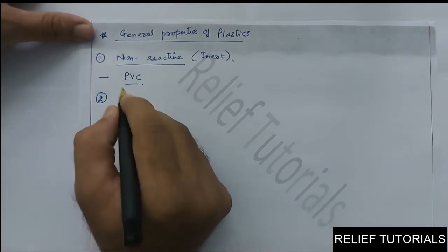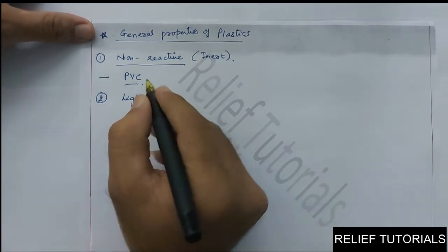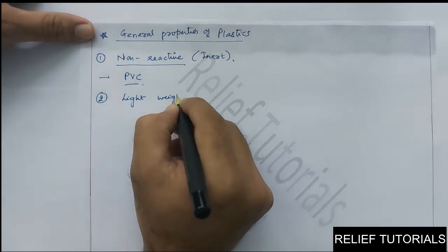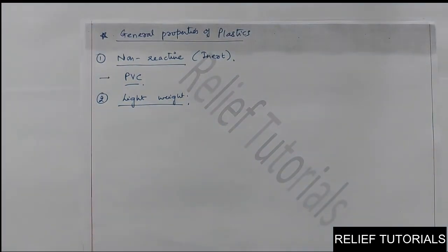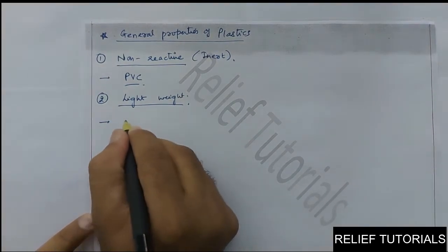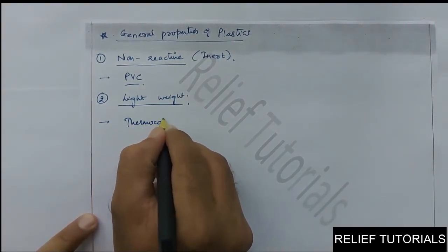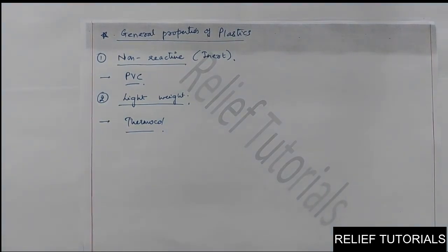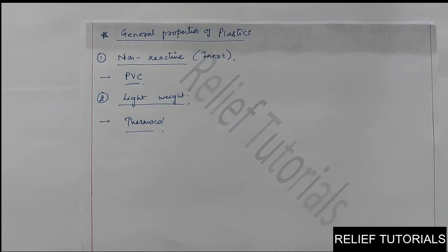Another important characteristic: plastics are lightweight. Metallic and steel bodies are heavy, but plastic materials are quite light in weight. The best example is thermocol — it is very light in weight and that is why it is used to make disposable items like disposable cups, dishes, and packaging material to pack mobile phones, TVs, refrigerators, and washing machines.